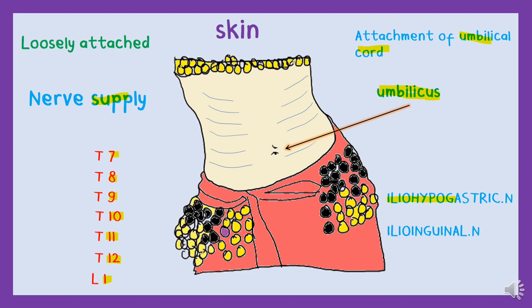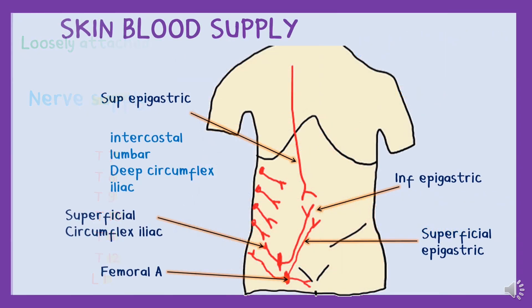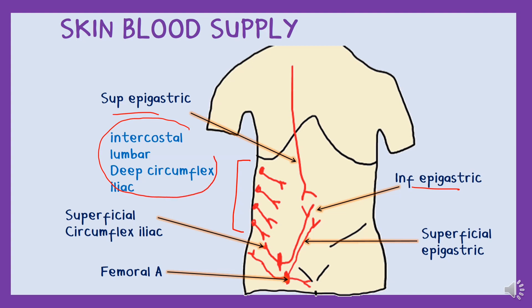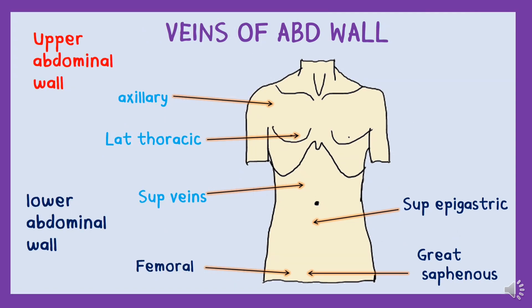The nerve supply is also by the L1 lumbar nerve, mainly by the iliohypogastric and the ilioinguinal nerves. The blood which nourishes the skin comes from various arteries. The skin of the midline is supplied by the superior epigastric and inferior epigastric arteries. The skin of the flanks — the region between your ribs and hips — is provided by branches of the intercostal, lumbar, and deep circumflex iliac arteries. The remaining skin of the inguinal region is supplied by the superficial epigastric, superficial circumflex iliac, and femoral arteries.